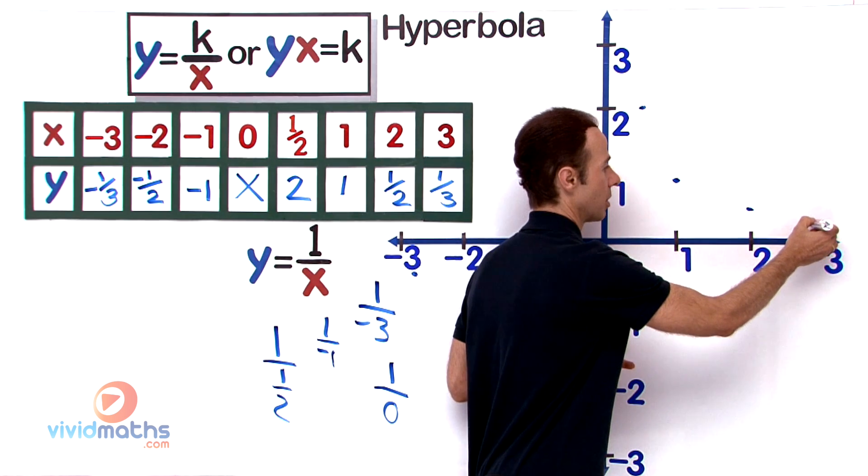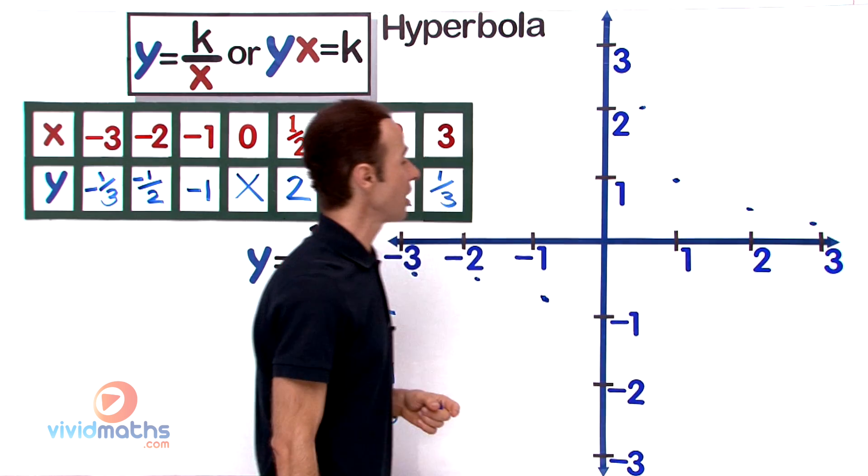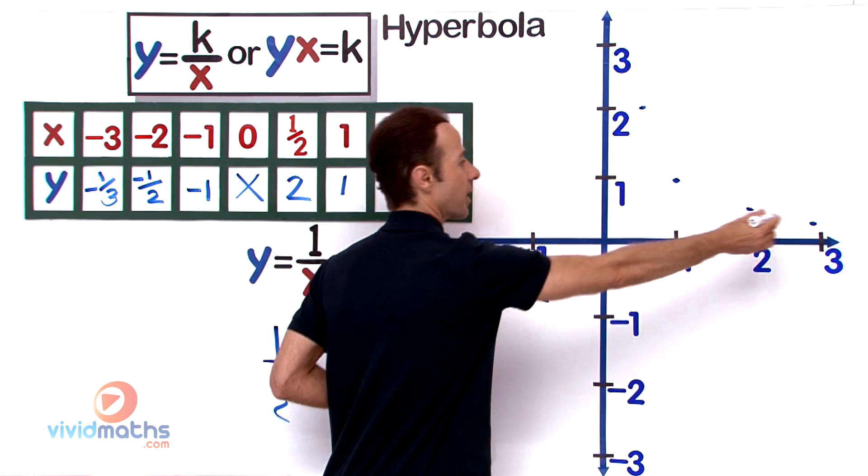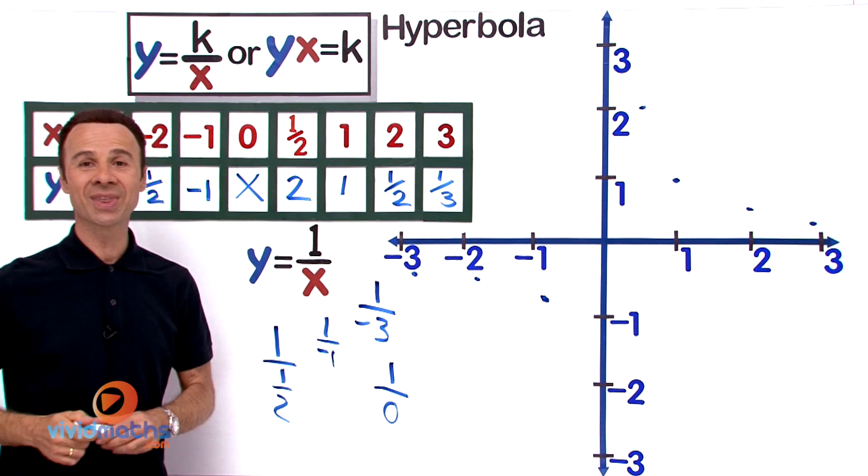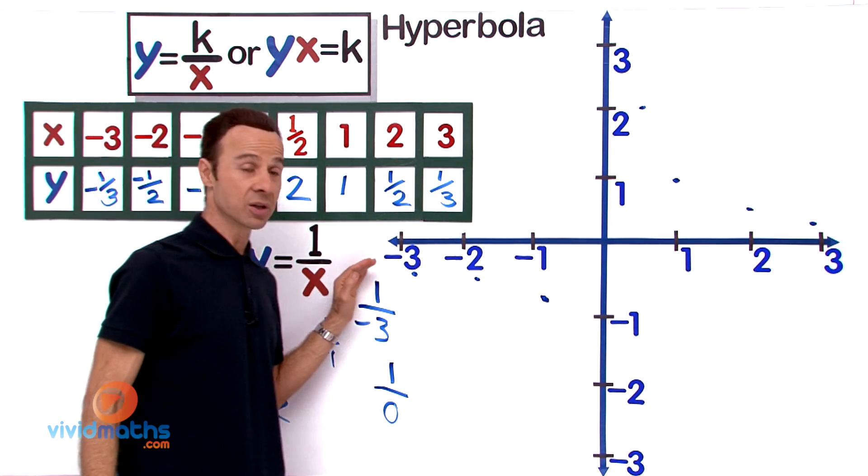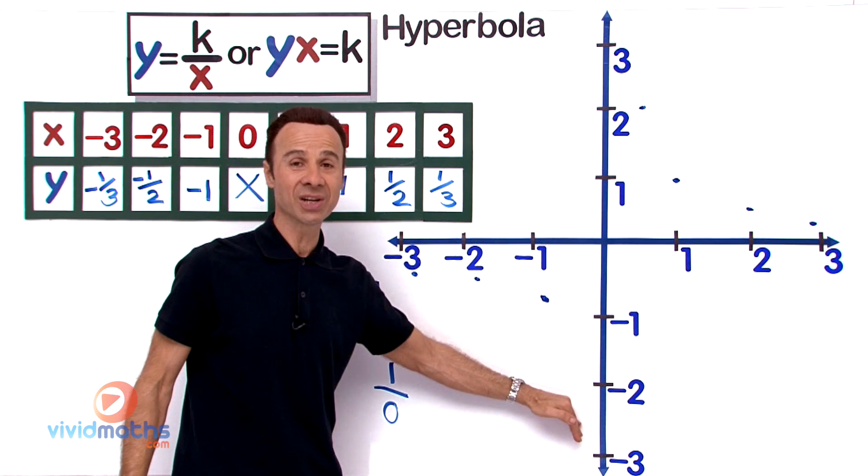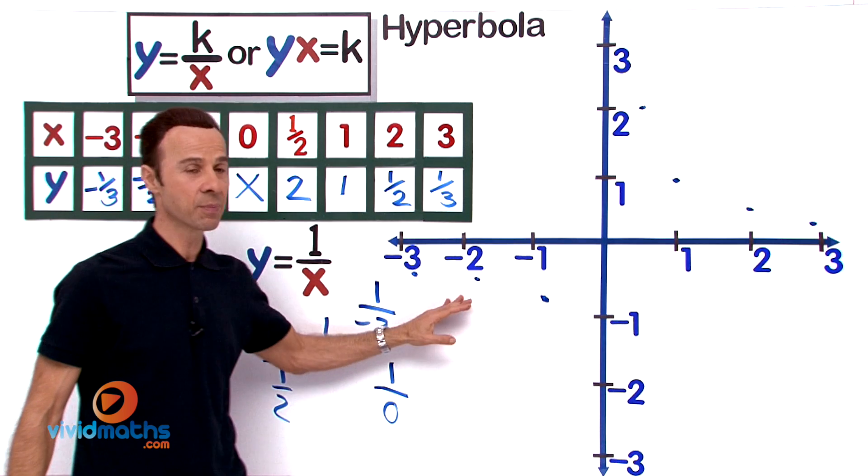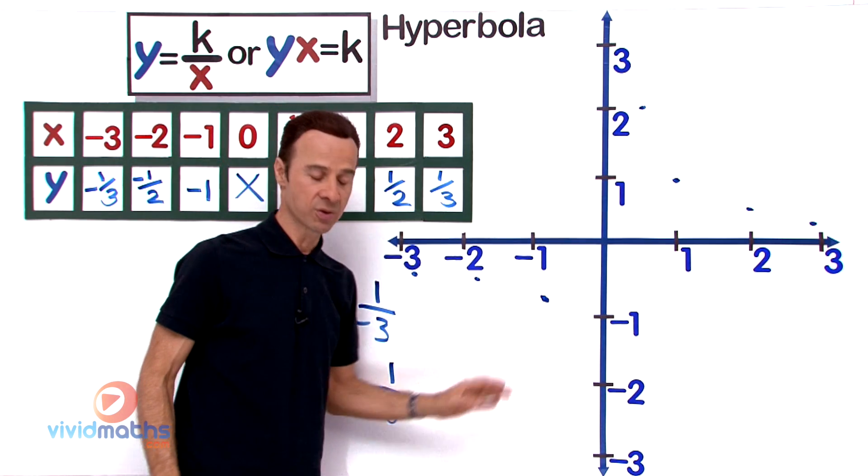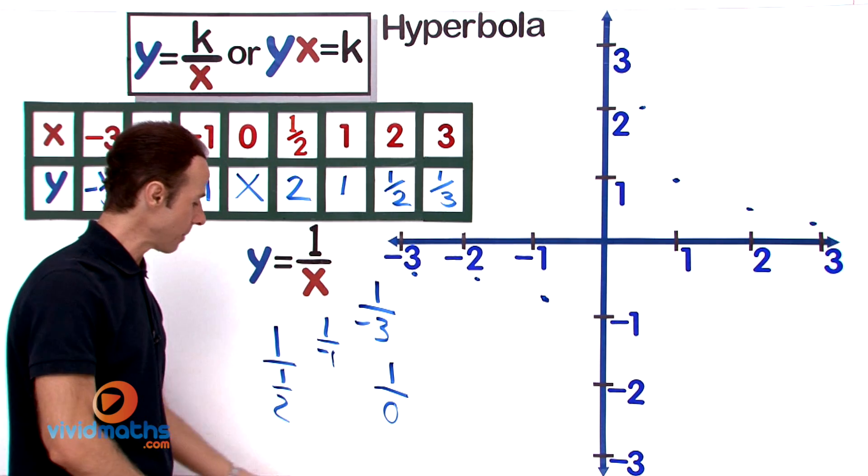So there is our curve. It's kind of going across there. Now you're going to notice in a moment that they are not continuous. They are going to go like this, approach each axis but never actually touch. And we are also going to notice that they're the same shape and size in the two quadrants.